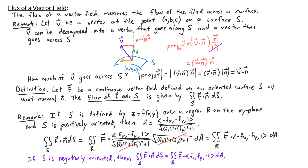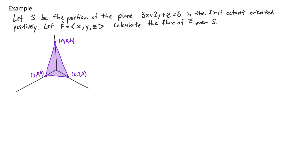Let's look at an example. Let S be the portion of the plane 3x plus 2y plus z equals 6 in the first octant, oriented positively. Let f be the vector field x, y, z, and let's calculate the flux of f over S. Starting with a sketch: the plane intersects the x-axis at (2, 0, 0), the y-axis at (0, 3, 0), and the z-axis at (0, 0, 6). We want to define S in the form z equals some function of x and y, so solving the plane equation for z gives z equals 6 minus 3x minus 2y.